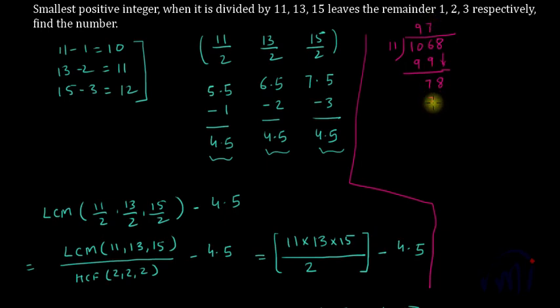And if I divide 1068 by 13, 13 times 8 is 104. If I subtract, 6 minus 4 is 2, and now if I note down this 8 I get 28, and 13 times 2 is 26, and if I subtract I get remainder as 2.